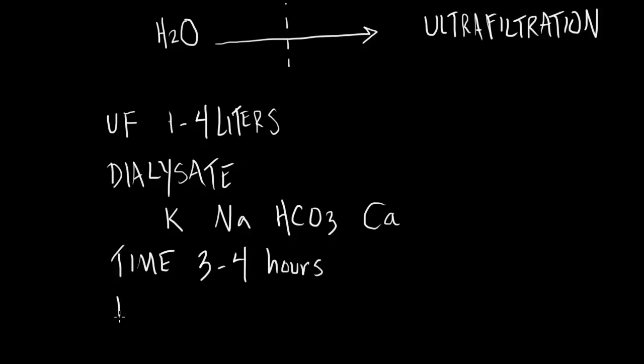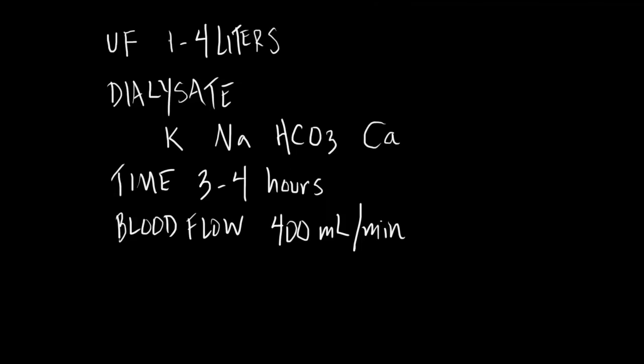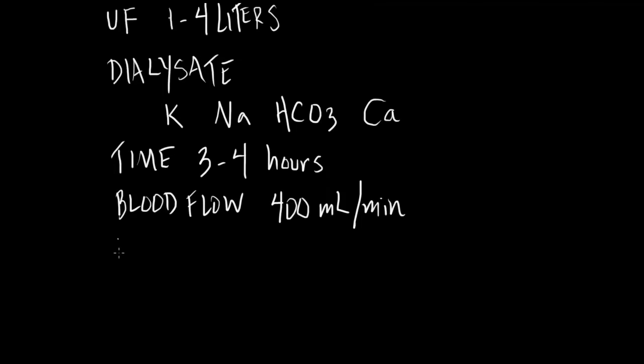We control the blood flow, and that's usually 400 milliliters per minute. And then we control what's called the dialysate flow. The dialysate flow is usually twice the blood flow, so that's 800 milliliters per minute.